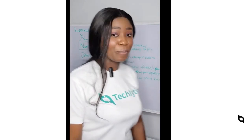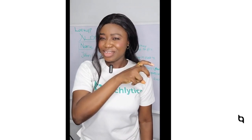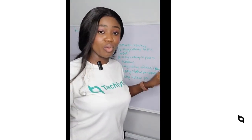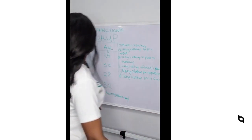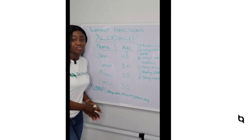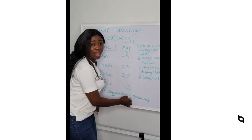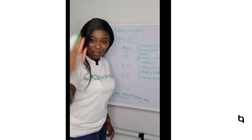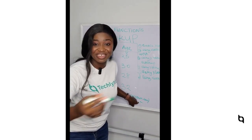Let's look at the arguments in XLOOKUP. There are three major required arguments — the optional ones are where all the extra functionality comes in, and we'll cover those later. The three basic arguments are: lookup_value — what you're looking for; lookup_array — where to look; and return_array — what you want XLOOKUP to return.